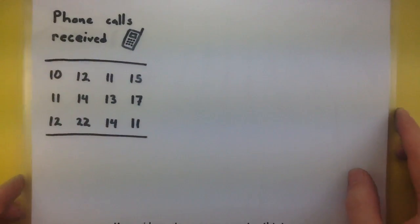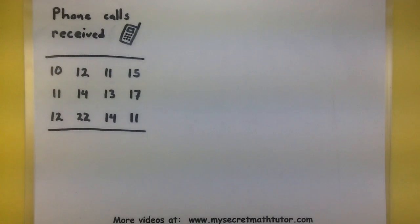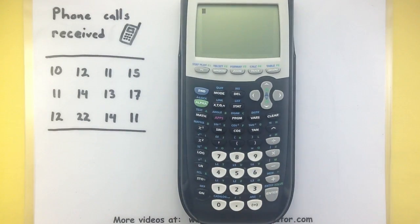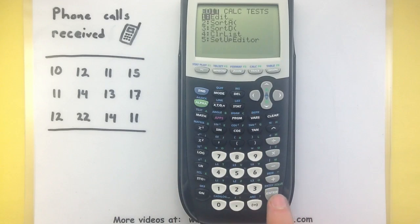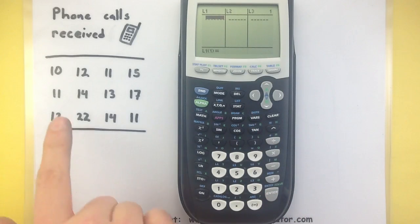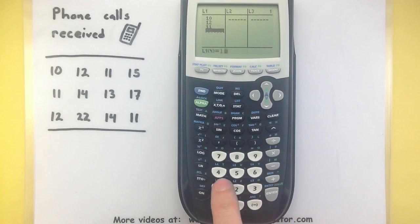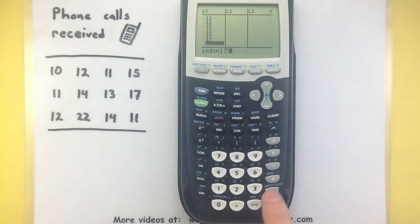So let's get some data and see how we can use our calculators to make this box and whisker plot. The first part we need to do is get all of this data into the calculator. Press your stat button, edit, and then simply enter in all of your data values. There you go, so all of our data is stored in there.